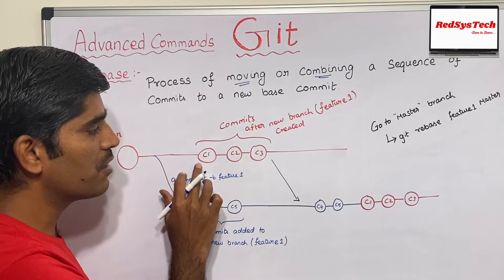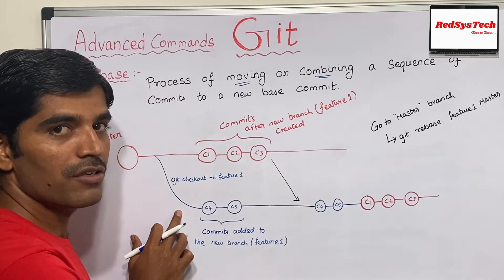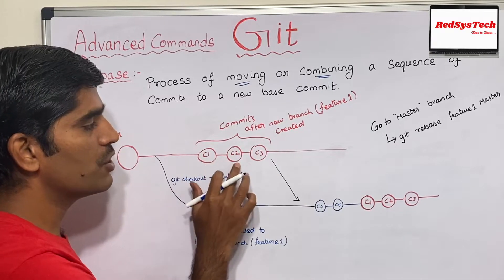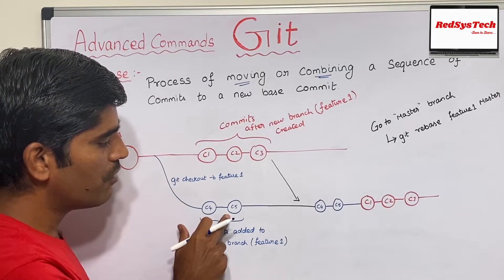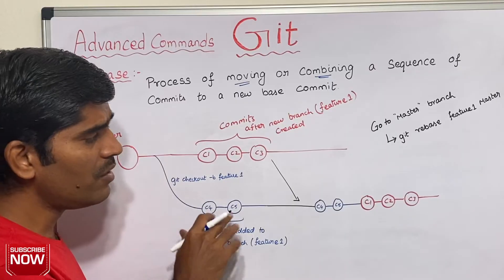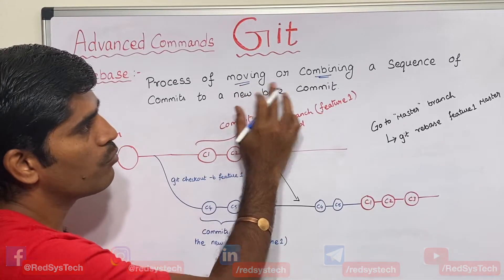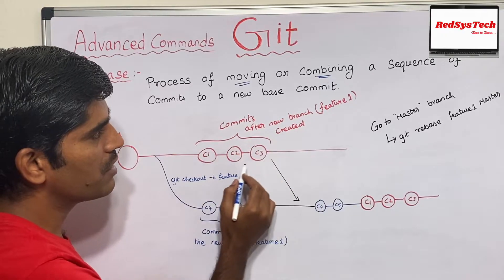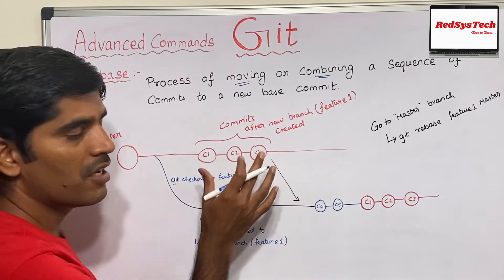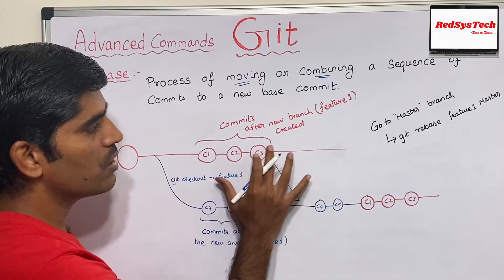That other developer pushes to the master branch — commits C1, C2, C3 — after you had already taken the feature1 checkout. So C4 and C5 happened on your feature branch, and now you want C4 and C5 to be in master. You can do this with rebase — the process of combining the sequence of commits from the feature branch to the master branch.